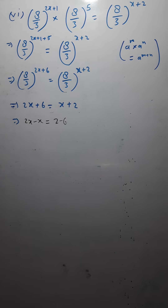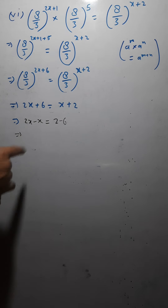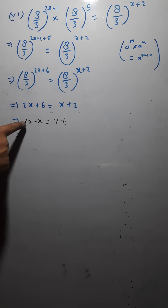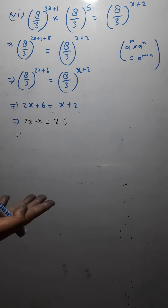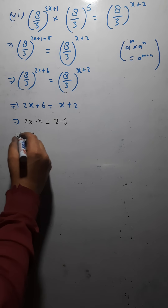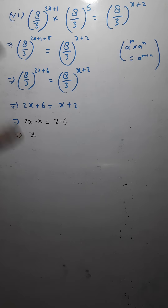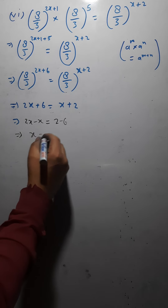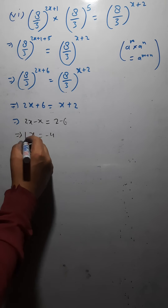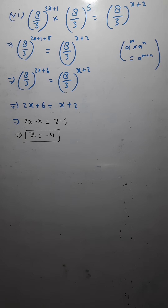So 2x minus x is 1x, which means just x. And 2 minus 6 is minus 4. So x equals minus 4. This is how you solve the given questions.